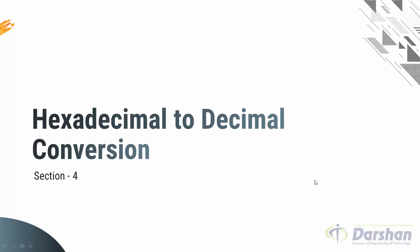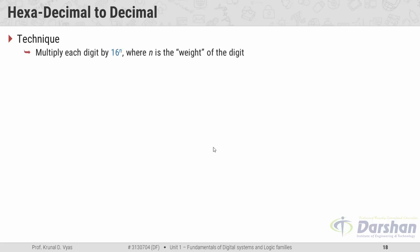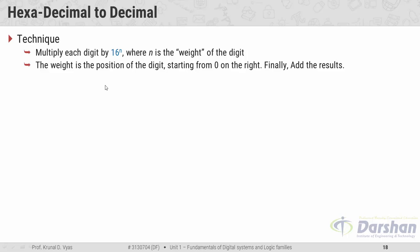The fourth section covers hexadecimal to decimal conversion. The technique is to multiply each digit by 16 raised to n, where 16 is the base and n is the weight of the digit — the position starting from 0 on the right — then add all results. The first example covers the integer portion: ABC in hexadecimal.